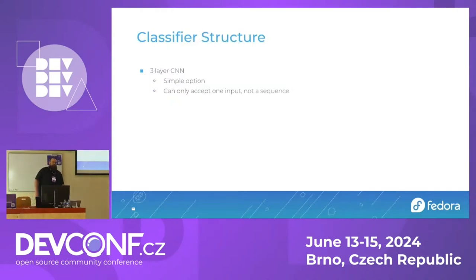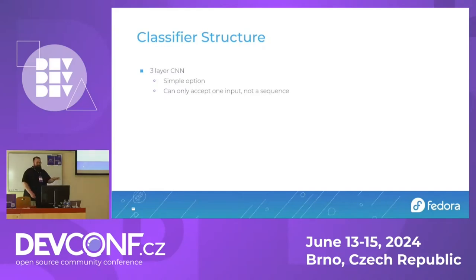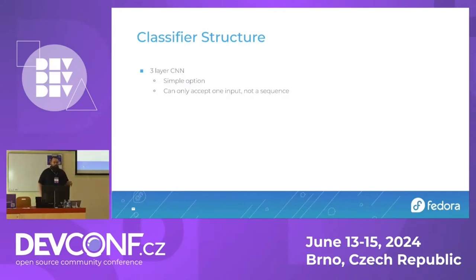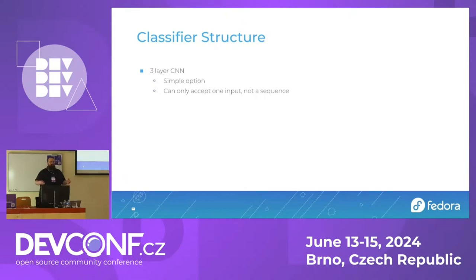Keeping with the theme of let's do the simplest thing possible, we went with a three-layer CNN. It is simple — really simple. This is the kind of model you would find in a first-time PyTorch tutorial. That's the level of simplicity we're talking about, but that's the whole reason for this experiment: what is the simplest possible thing we could do to answer the question? With that simplicity comes a limitation: that kind of neural network can only accept one input. So for one input you get one output; it can't understand sequences or time.